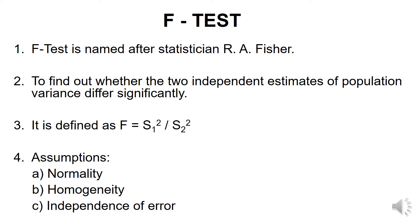For carrying out the F-statistic, the formula given in point number 3 on the right hand side is to be followed. The assumptions of F-test are as follows: Part A, normality, which means the values in each group are normally distributed. Part B, homogeneity, which means the variance within each group should be equal for all groups — this assumption is needed in order to combine or pool the variances within the group into a single source of variation. Part C, independence of error, which states that the error should be independent of each value.